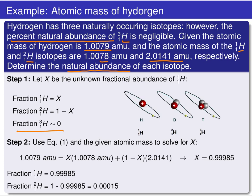We're solving for an unknown — let's call it X. X represents the fractional abundance of the most common isotope of hydrogen, hydrogen-1. Because the fractional abundance of the third isotope is essentially zero, we can ignore it. If X is the fractional abundance of hydrogen-1, then we can back out the fractional abundance of deuterium, which is simply 1 minus X.